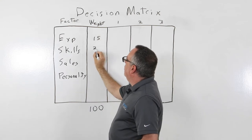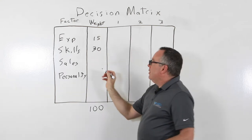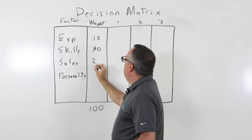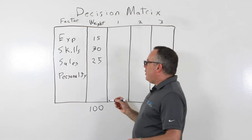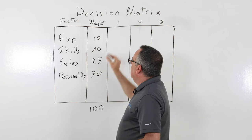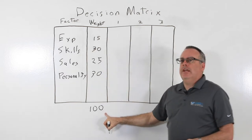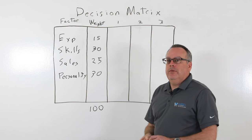Look at their skill set, maybe we weigh that as 30 out of a hundred. The sales process, maybe 25, their sales abilities, and their personality, very good culture fit is important, so we weigh that to a 30. So when you weight those factors, you have to make sure they add up to a hundred because that's kind of our measuring stick that we're going to evaluate each person.